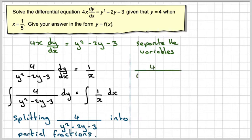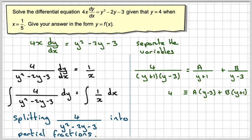If we write 4 and factorise it into (y + 1)(y - 3), then it will be A over y + 1 plus B over y - 3. Then we can say that 4 must be equivalent to A(y - 3) plus B(y + 1).